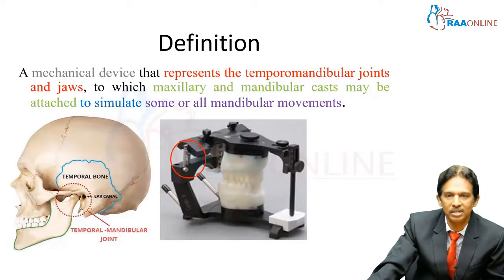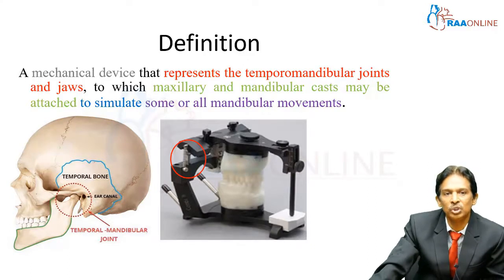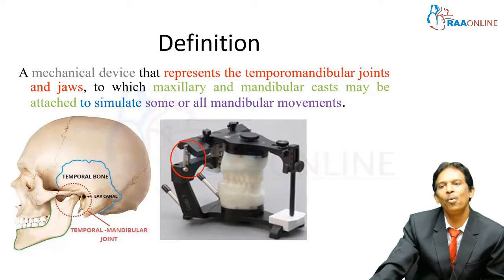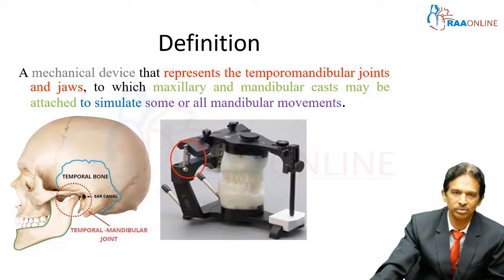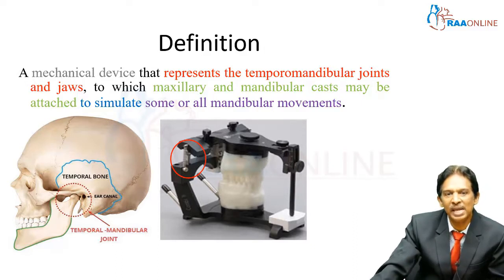The definition is very important. If you go for a preclinical prosthodontic viva or OSCE, whether undergraduate or postgraduate, they will ask you to define an articulator. The definition is: a mechanical device that represents the temporomandibular joint and jaws, to which maxillary and mandibular casts may be attached to simulate some or all mandibular movements.